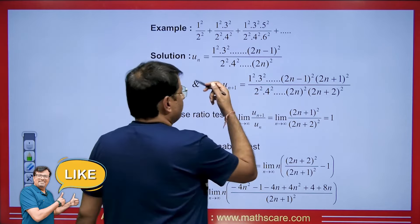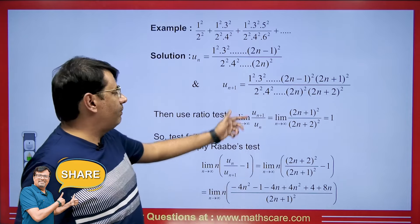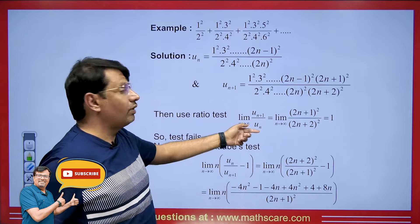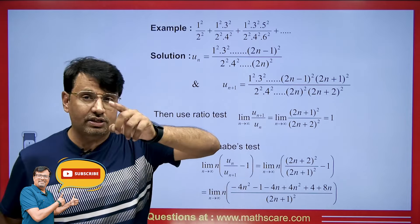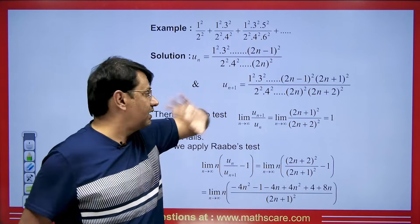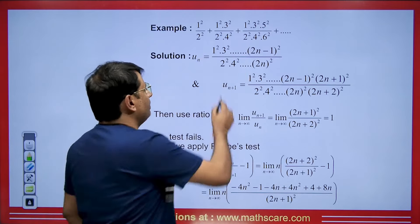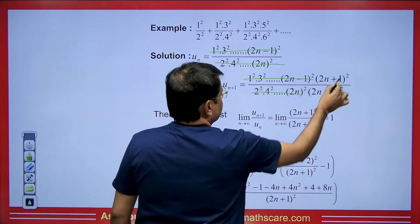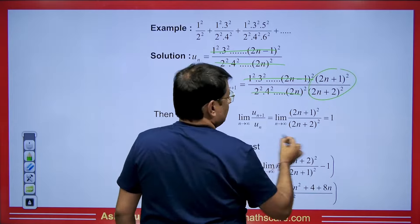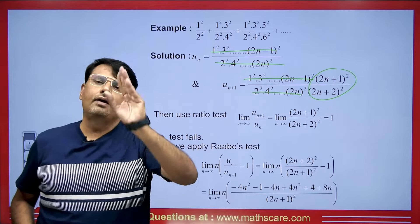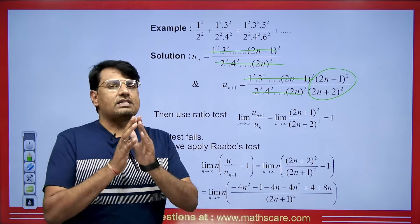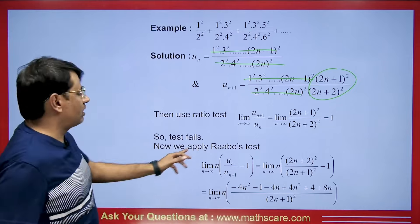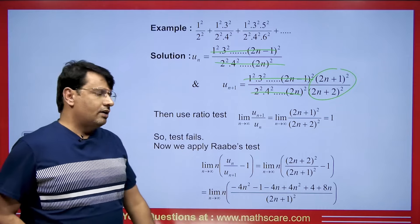We will first apply the D'Alembert ratio test: limit as n tends to infinity of U_{N+1} / U_N. You will see this term cancels with this term, and that term will be cancelled by this. After n tends to infinity, the value is 1, which means the test fails. Since the D'Alembert test failed, we apply the Rabbe test.